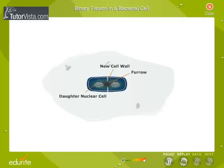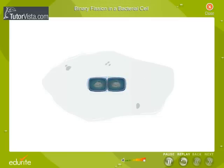The cytoplasm constricts in the middle to form two daughter protoplasts, each having a nuclear body. A double wall is formed in the furrow between the daughter protoplasts. The daughter cells separate due to the development of turgor in both cells.